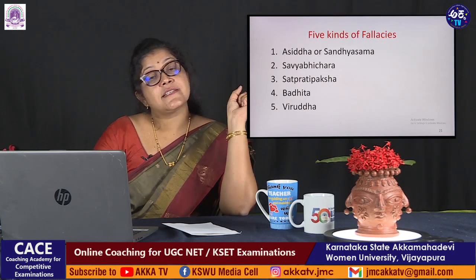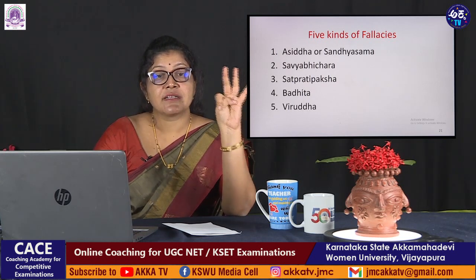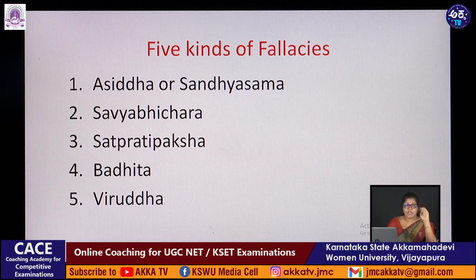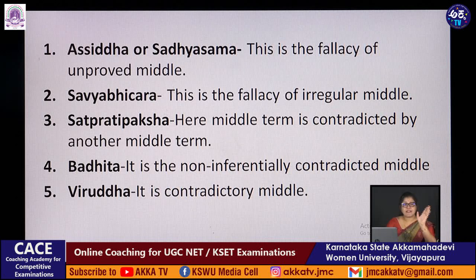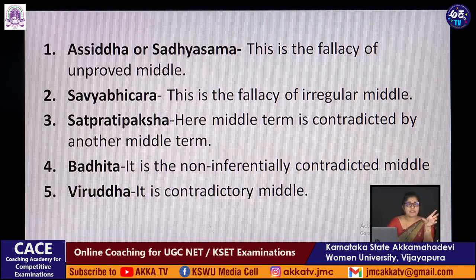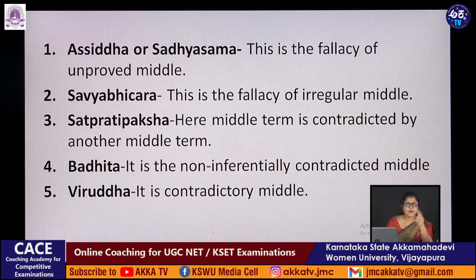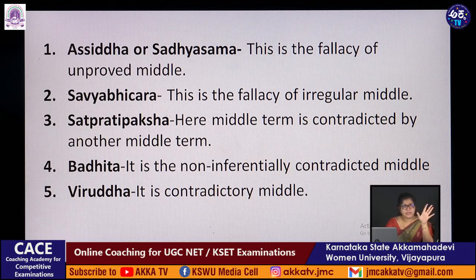There are five kinds of fallacies in Indian logic: asiddha (unproved middle), savyabhichara (fallacy of irregular middle — where the middle term is too wide or irregular), satpratipaksha (where the middle term is contradicted by another middle term — two opposite reasons), badhita (non-inferentially contradicted middle), and viruddha (contradictory middle — the opposite of what is claimed, e.g., 'fire is cold' — if fire is the reason for coldness, that is viruddha).